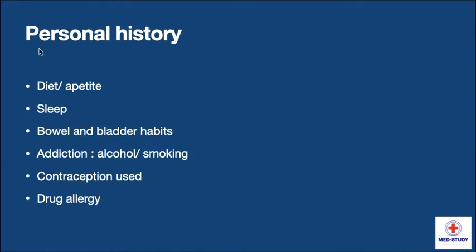Now coming to personal history, we have to take the history of diet and appetite, sleep, bowel and bladder habits of the woman. We have to inquire about addiction, whether alcohol or smoking, the method of contraception used, and also any drug allergy if present.